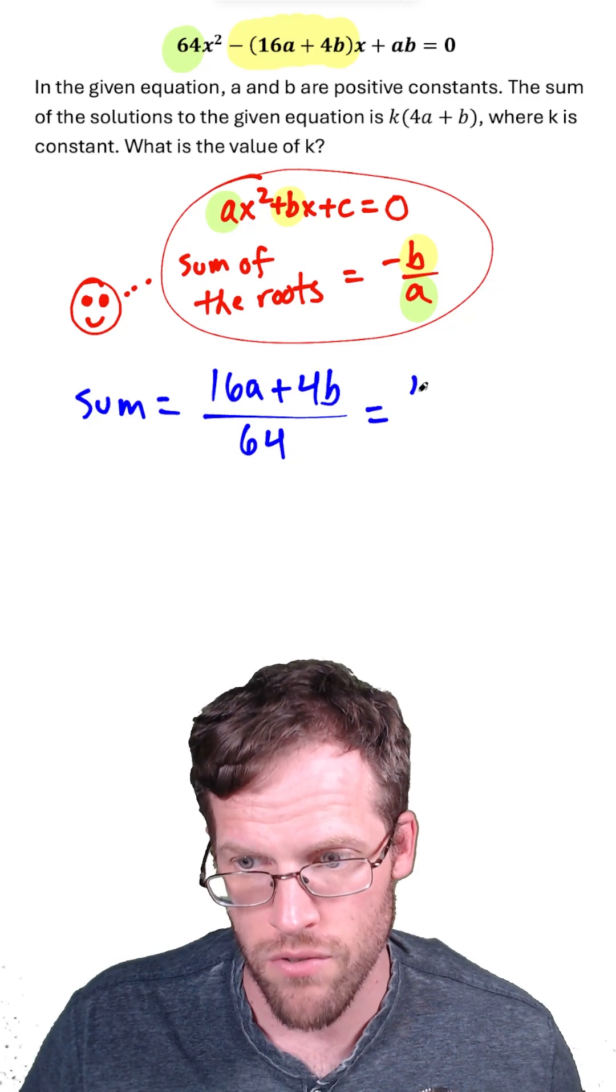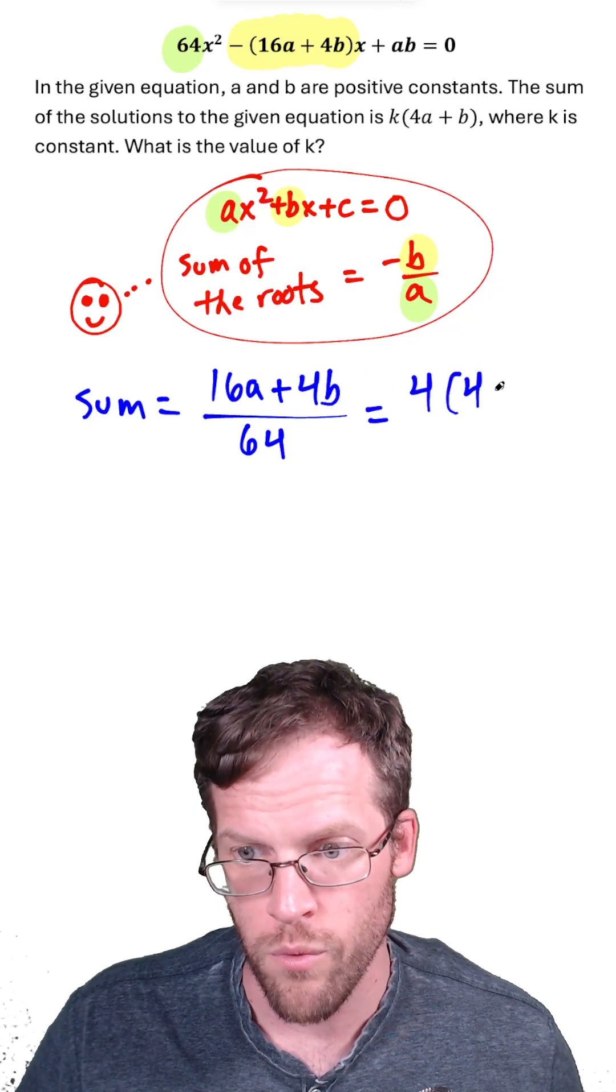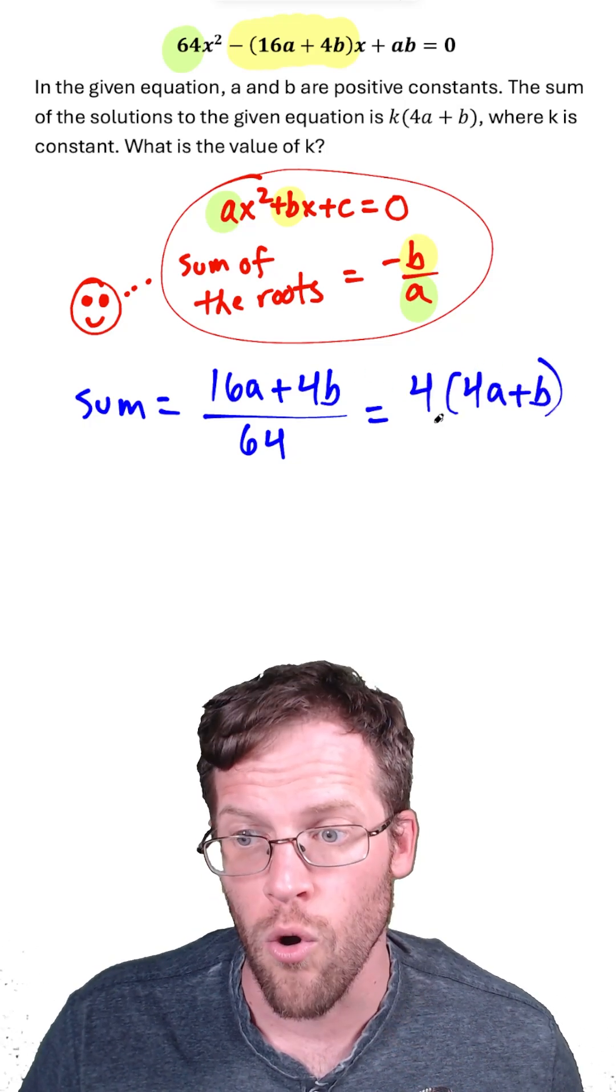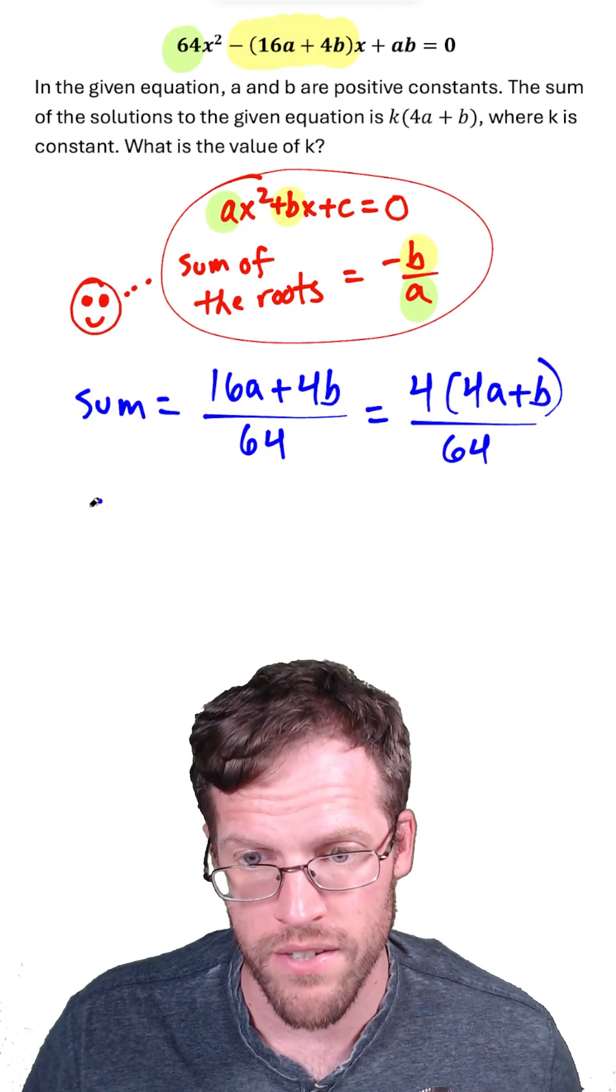So now we could just factor on top. We take out a common factor of 4, and we're left with 4a plus b over 64, and now this simplifies nicely here.